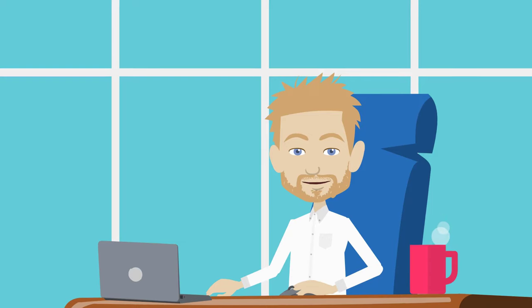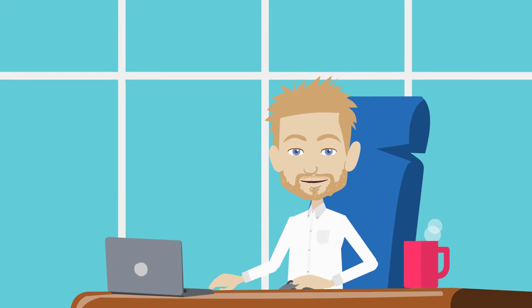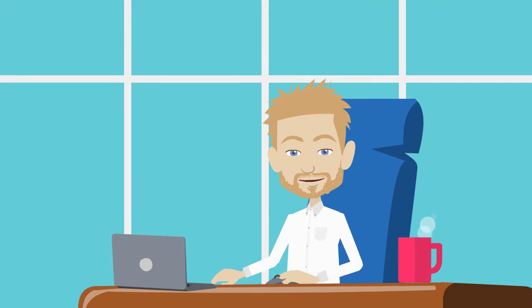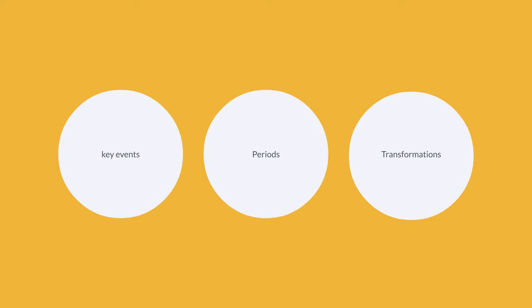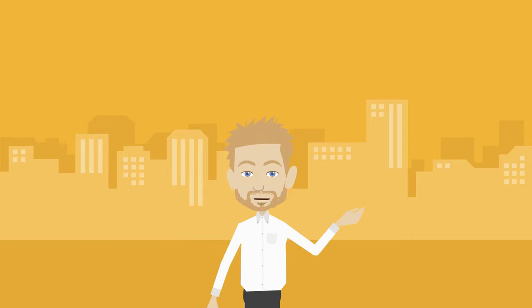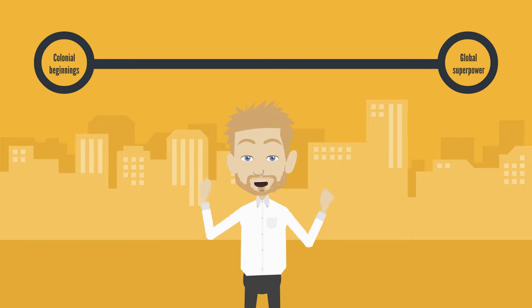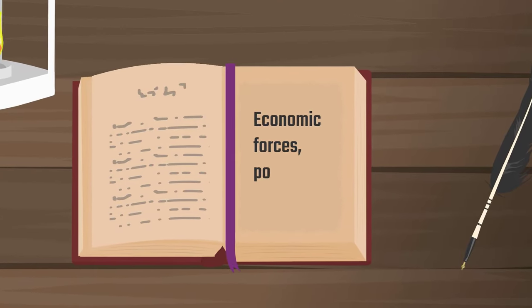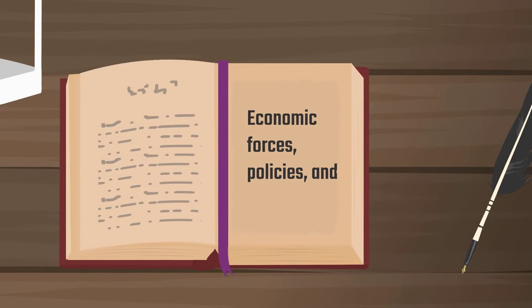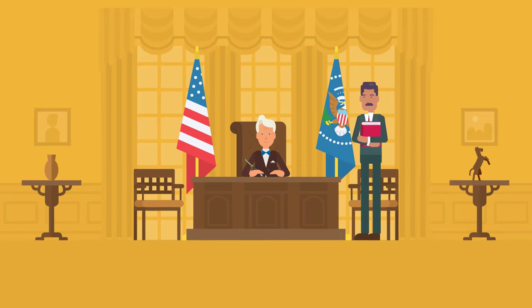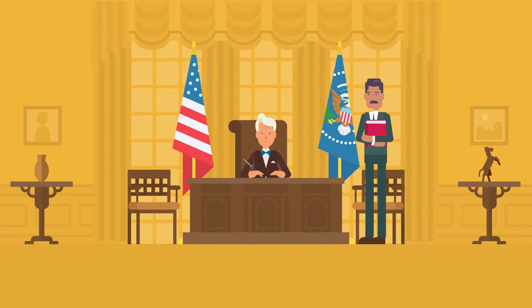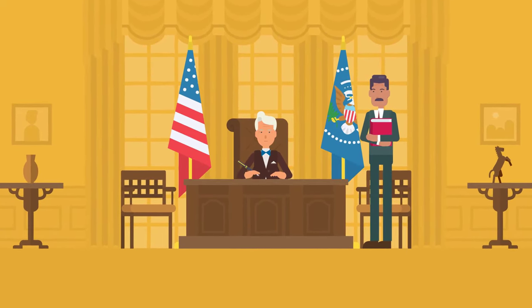The history of the US economy is a fascinating narrative spanning centuries, characterised by a series of key events, periods and transformations that have shaped its trajectory from colonial beginnings to becoming an international global superpower. Understanding this history provides insights into the economic forces, policies and innovations that propelled the United States to its current position as the world's largest economy.